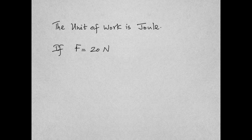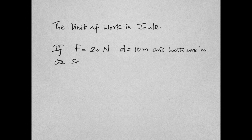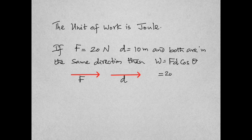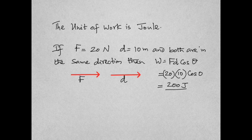Here is an example. If the force is 20 Newtons, the distance moved is 10 meters, and both force and distance are moving in the same direction, the angle between them is 0 degrees. So the formula for work is F·D·cosine theta — that's 20 times 10 times cosine of 0. Cosine of 0 is 1, so we get the answer as 200 joules.